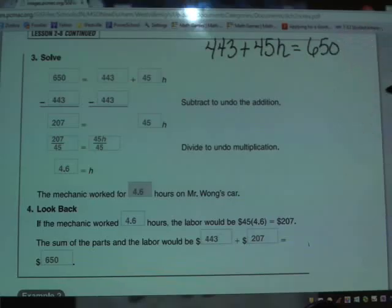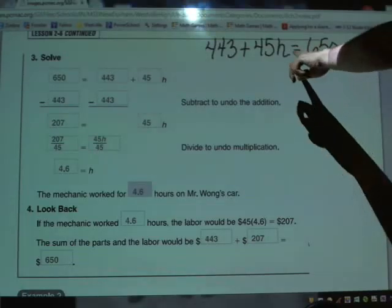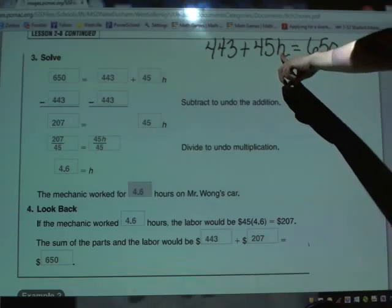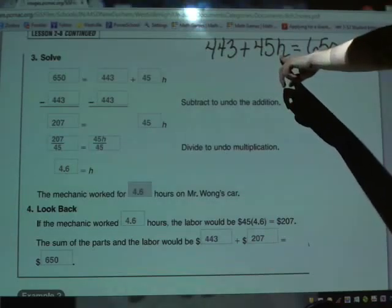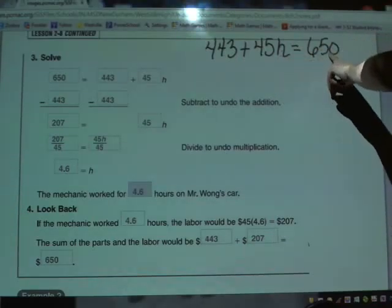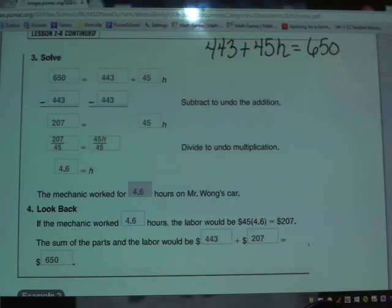I'm going to rewrite this as 443 plus 45H equals 650. If I'm solving at this point, we want to keep our variable on the left, and I do indeed have H already on the left side, which is a good thing. And I want to end up sending all my numbers off to the right side, and as you can see, 650 is already over there.